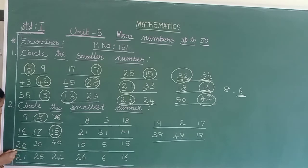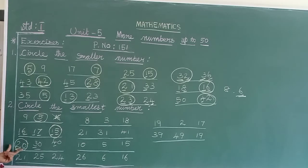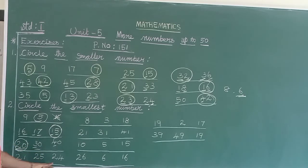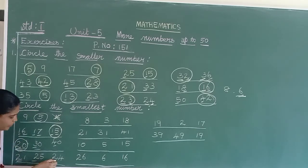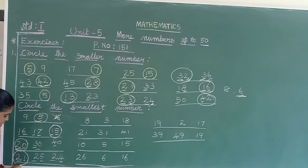Next: 21, 25, 24. All are 2-digit numbers. Come to the tens place — all are the same, 2. So come to the ones place: 1, 5, 4. Between these, 1 is the smallest. So 21 is the smallest one.